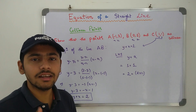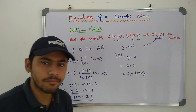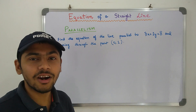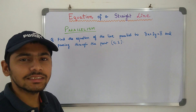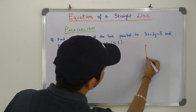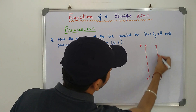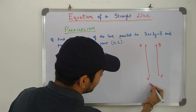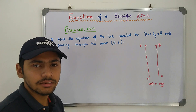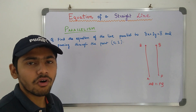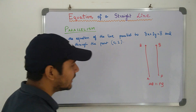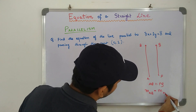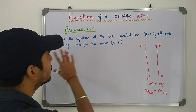This point satisfies the given equation and hence all three points are collinear — all three points lie on a single straight line. Moving on to Parallelism. If two lines are parallel to each other — take for example AB and PQ — both lines are parallel to each other. If two lines are parallel to each other, the slope of both lines will be equal. That means the slope of AB will equal the slope of PQ. This property is called parallelism.